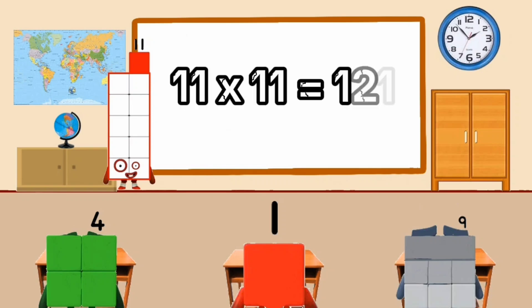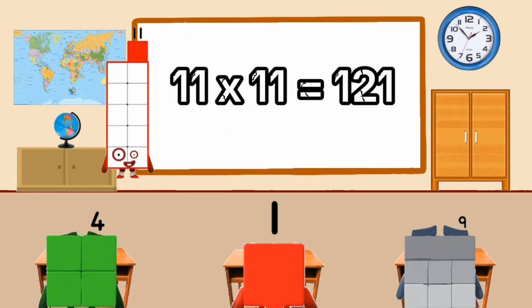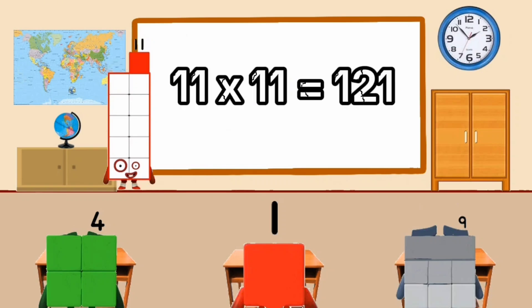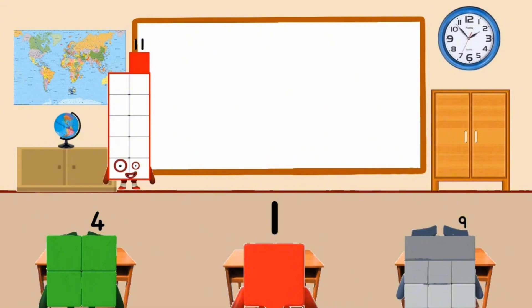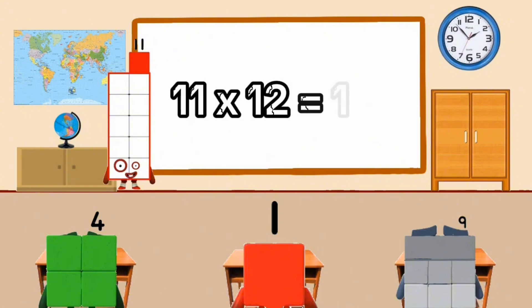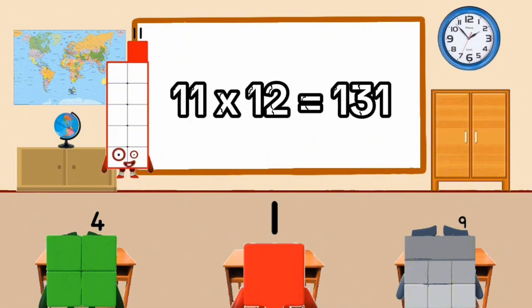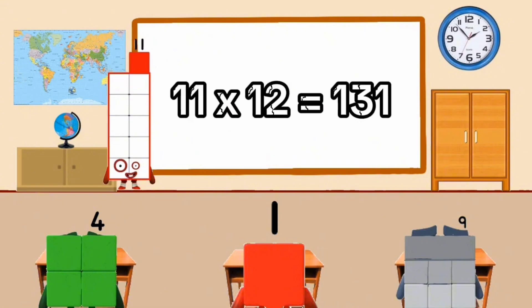11 times 11 equal 121. 11 times 12 equal 131.